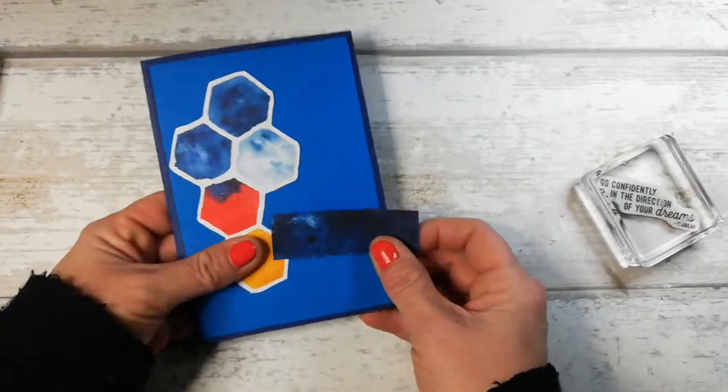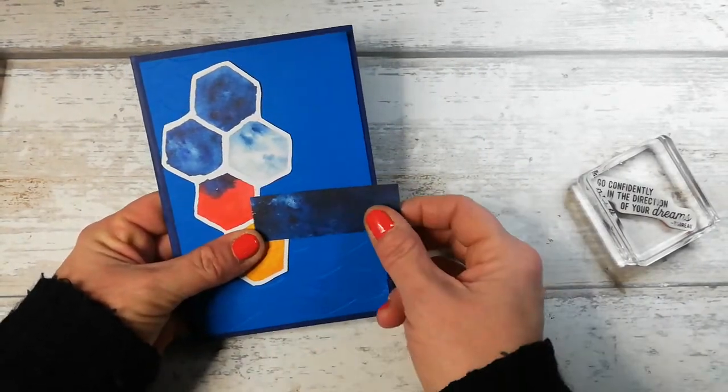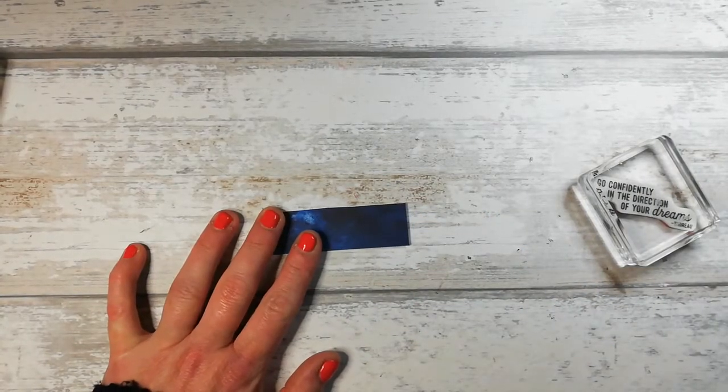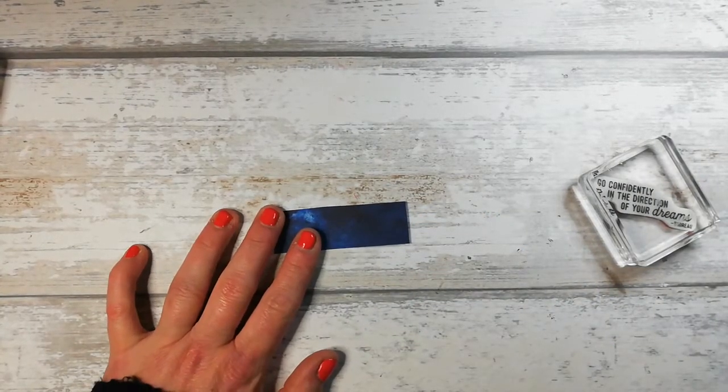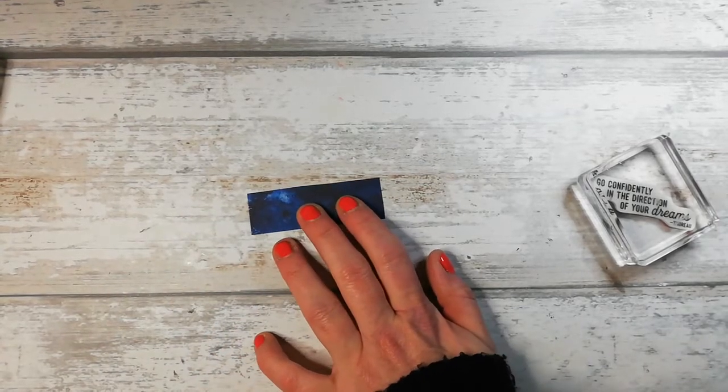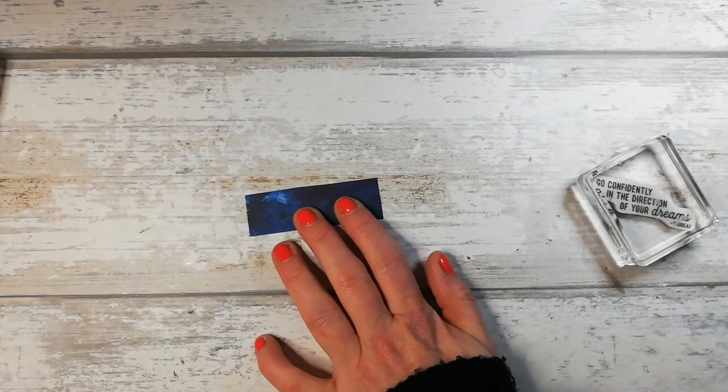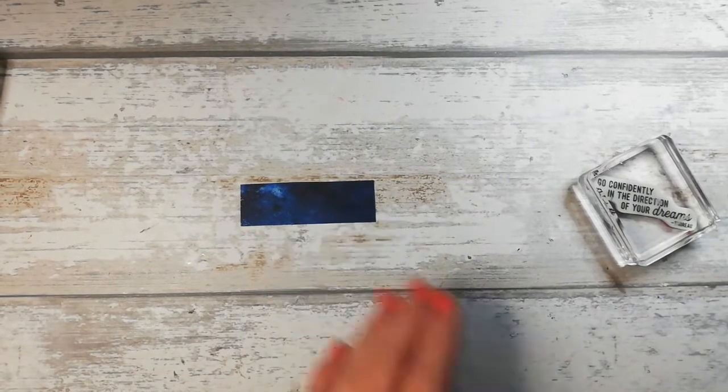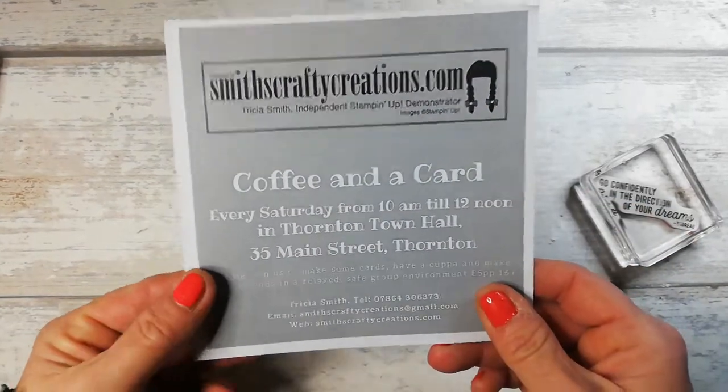Anyway, let's get on to this. So I think what I'll do is I shall emboss this first. Now, we do need a piece of scrap paper. I do not know where mine have went. Hang on a second. Let me use one of my coffee and card flyers.